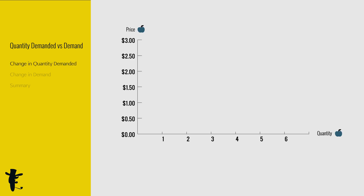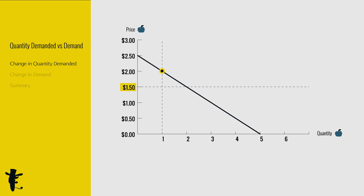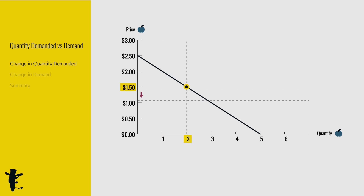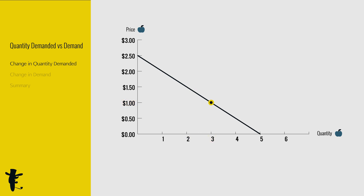Let's look at the demand curve again. When price decreases from $2 to $1.50, quantity increases from 1 to 2. From $1.50 to $1, quantity increases from 2 to 3. Notice that the dot just moves along this curve. In econ speak, this movement is called change in quantity demanded. When price changes, we say there's a change in quantity demanded.